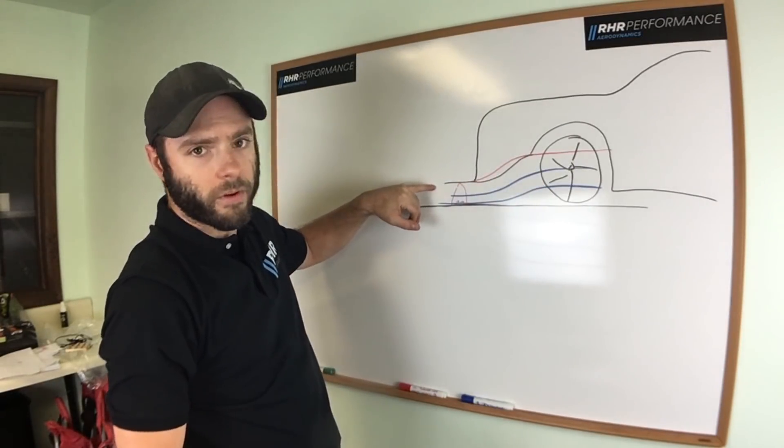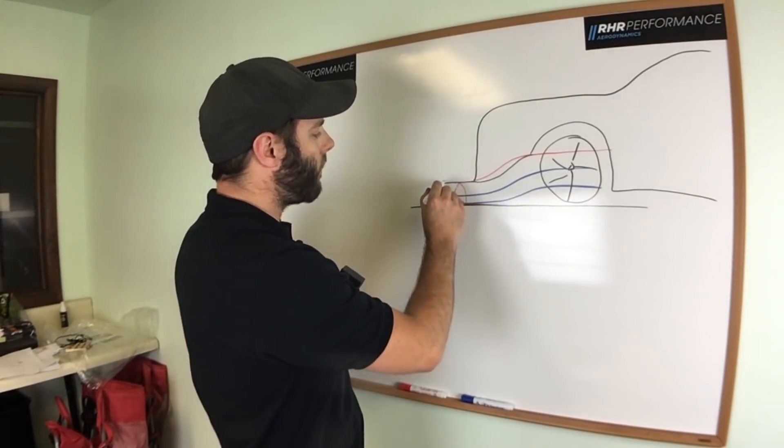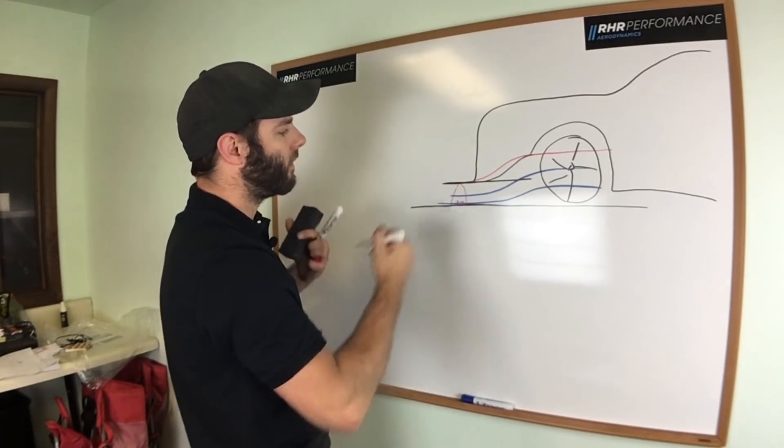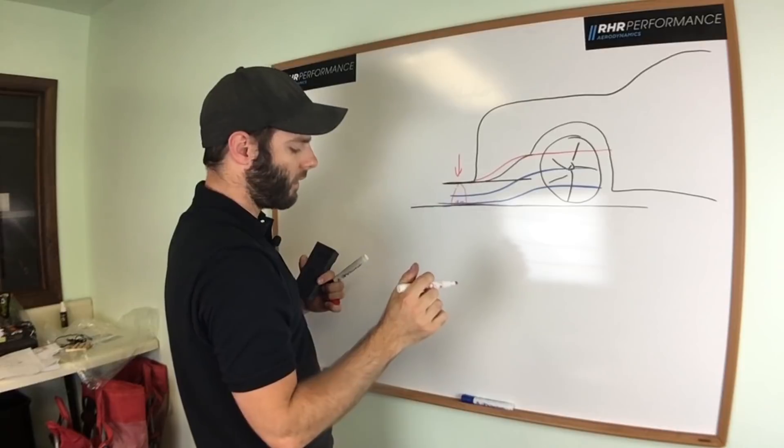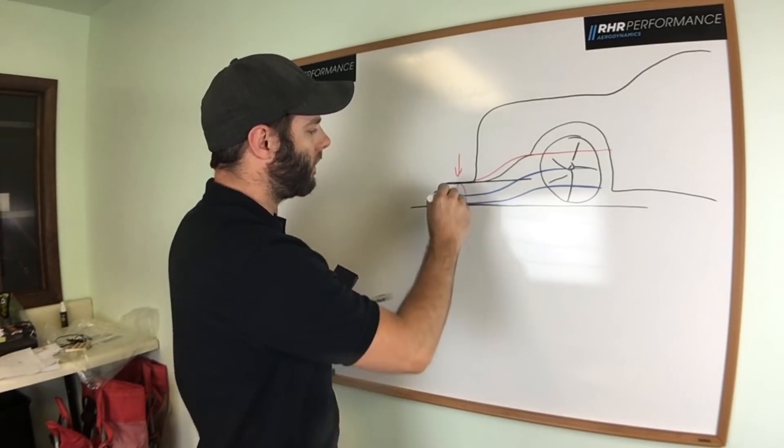So Bernoulli's principle, remember, told us as air speeds up, the pressure decreases. So on a regular flat splitter, you'll have some high pressure right here. You'll get a little bit of a low pressure underneath.